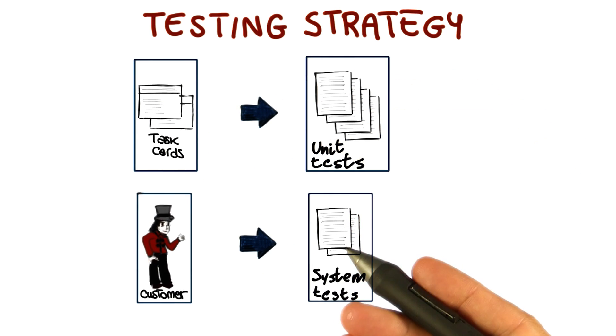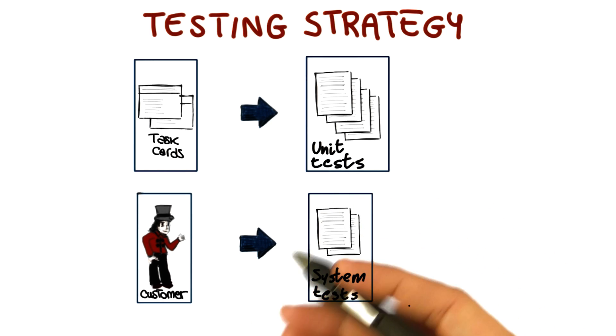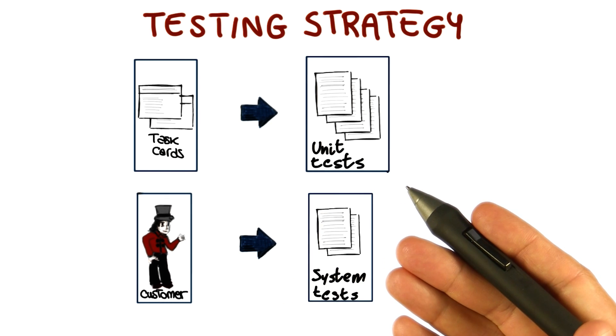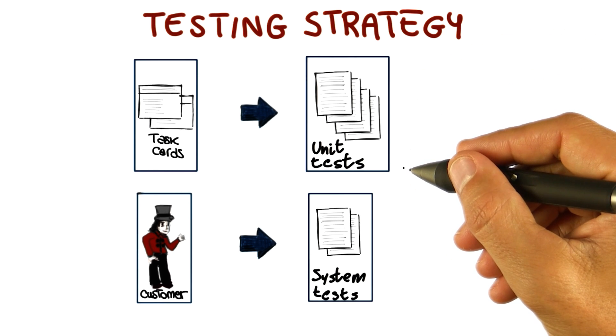The second kind of tests are system tests, also called acceptance tests. And those tests involve the customer. So basically what happens is that the customer provides test cases for their stories. And then the development team transforms those into actual automated tests.